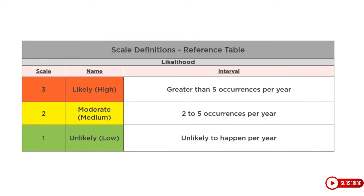Starting with likelihood — how often does a defined risk occur throughout a given period? In this example, we are saying that an occurrence once a year is rated low, or an unlikely to happen scenario, whereas more than 5 will be rated very likely. That middle ground, 2 to 5, gives us room to play with the numbers a little. Having a defined interval allows the same and repeatable grading system.